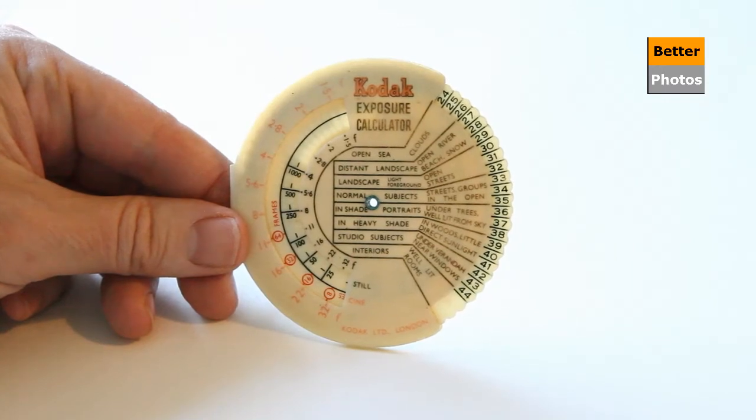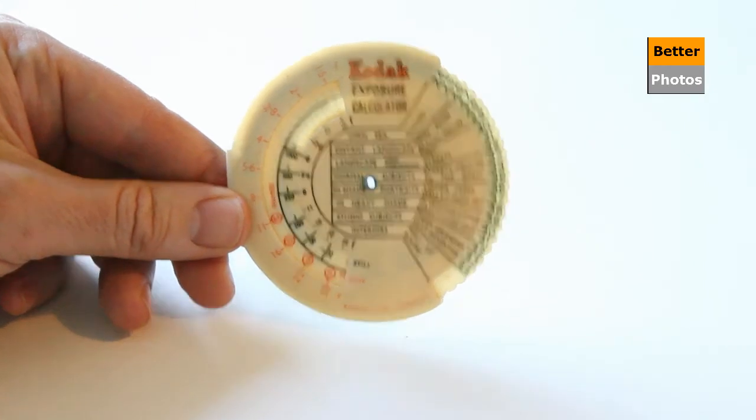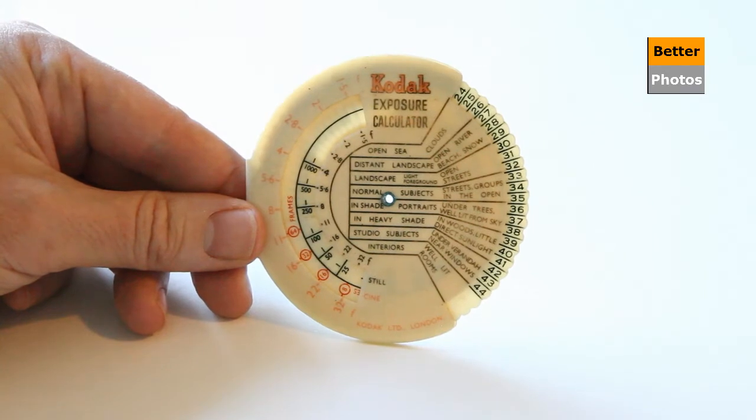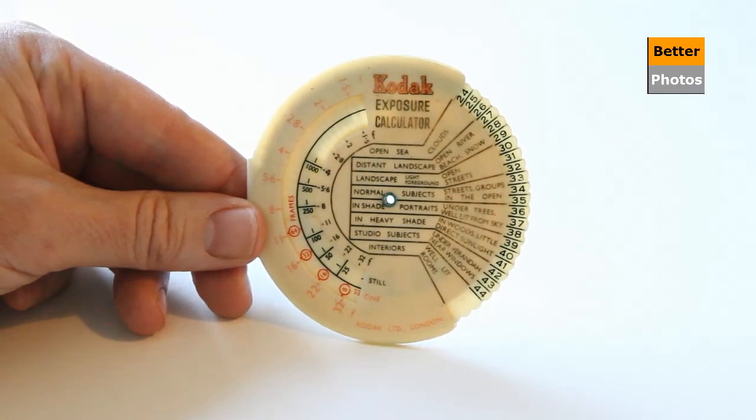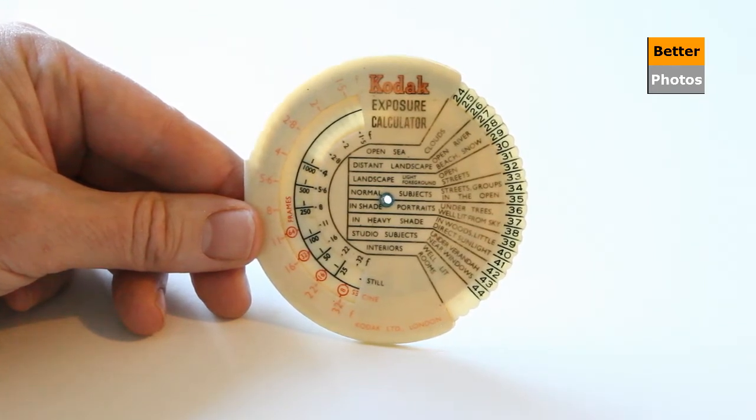Well, this particular one dates from around about the 1940s I think, and in days gone by cameras didn't have inbuilt light meters so we had to find a different means of calculating exposure. In other words, the shutter speed and aperture combinations that we needed to dial into the cameras to get the correct exposure for the kind of pictures we were looking for.